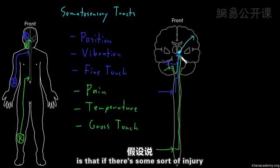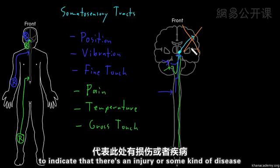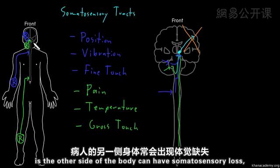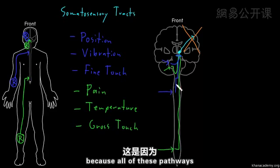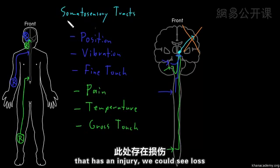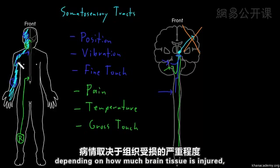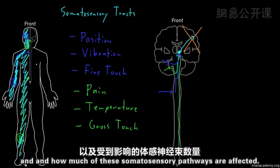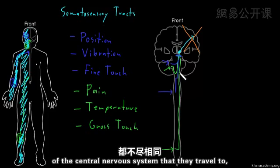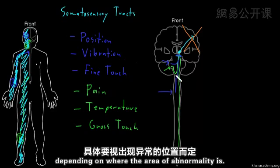Because the somatosensory tracts have this anatomy and structure, one major consequence is that an injury to one cerebral hemisphere often causes somatosensory loss on the other side of the body, since all these pathways cross from one side to the other. For example, an injury to the left cerebral hemisphere could cause loss or abnormal somatosensation on the right side of the face and body. Additionally, abnormalities in different parts of the brainstem or spinal cord could affect some types of somatosensation but not others, depending on where the injury is.